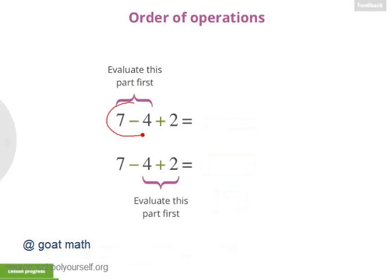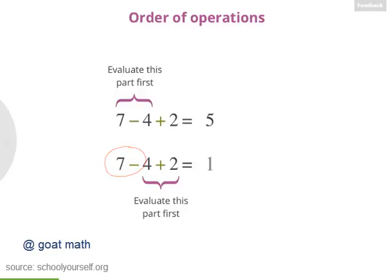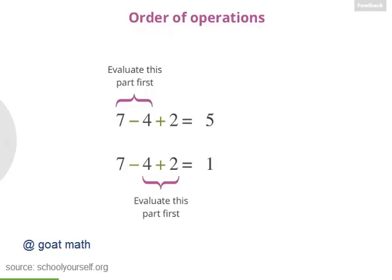So 7 minus 4 is 3, and then adding 2 gives you 5. And down here, 4 plus 2 is 6, and then 7 minus 6 equals 1. So evaluating this expression two different ways gives you two different answers. And that's no good. That's why in math we have what's called an Order of Operations — a standard way of doing things so that when you write down an expression, everyone will evaluate it the same way.